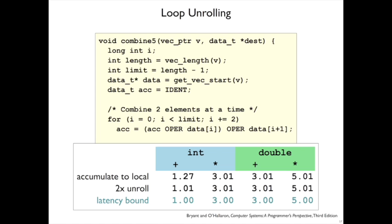If we make this change, we do get some improvement. It turns out that we reduce the loop overhead relative to the work to be done in the case of integer addition. But nothing changes for everything else, whether it was three or five cycles.